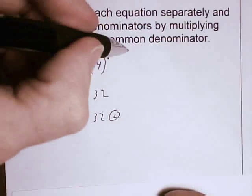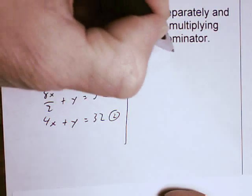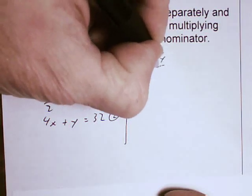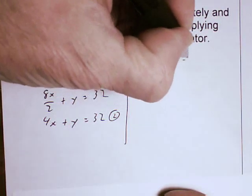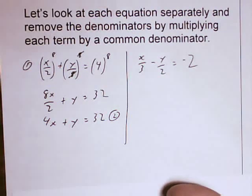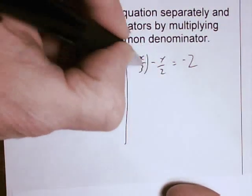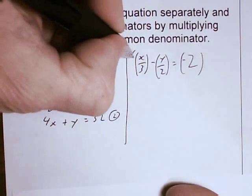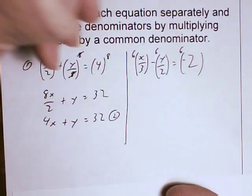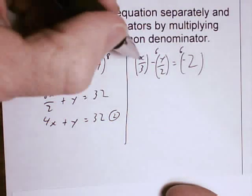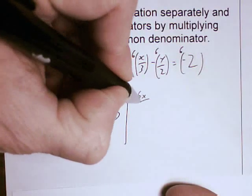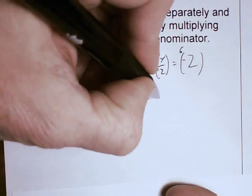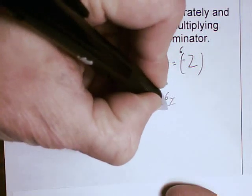Let's look at the second one. x over 3 minus y over 2 equals negative 2. I'm going to multiply every term by 6. So that gives me 6x over 3 minus 6y over 2 equals negative 12.